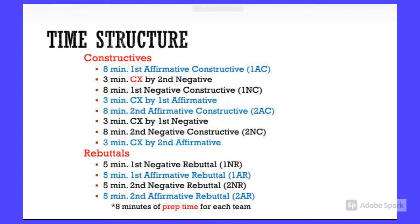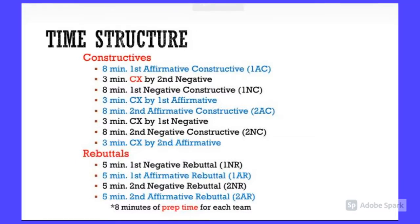In between each affirmative and negative constructive there are CX markers, which just means cross-examination. That's when you get to ask your opponent questions — whoever just spoke gets asked questions by the other team. All four people in the debate round each give a constructive speech, and they each get to ask and answer CX questions.